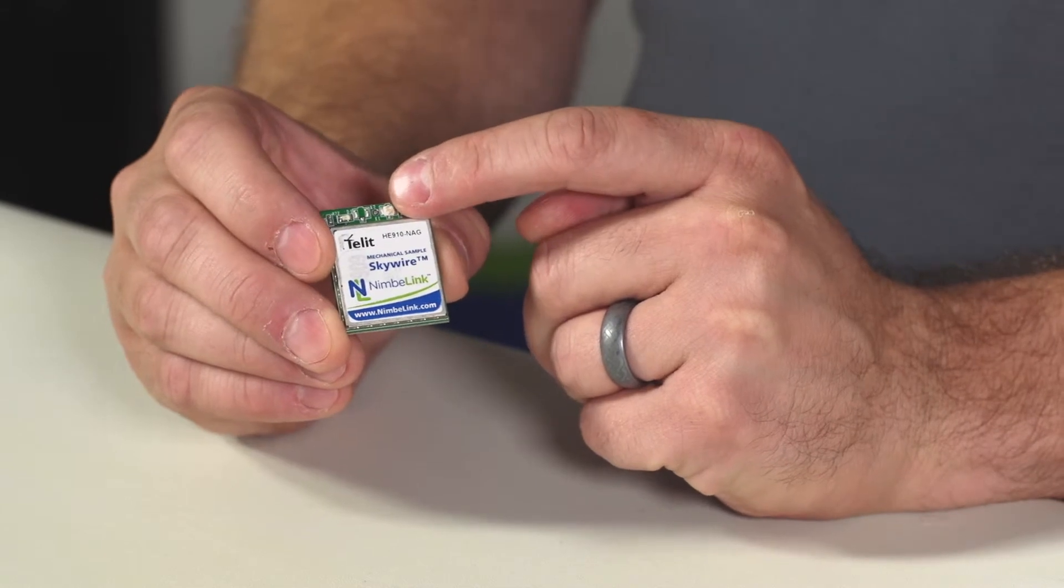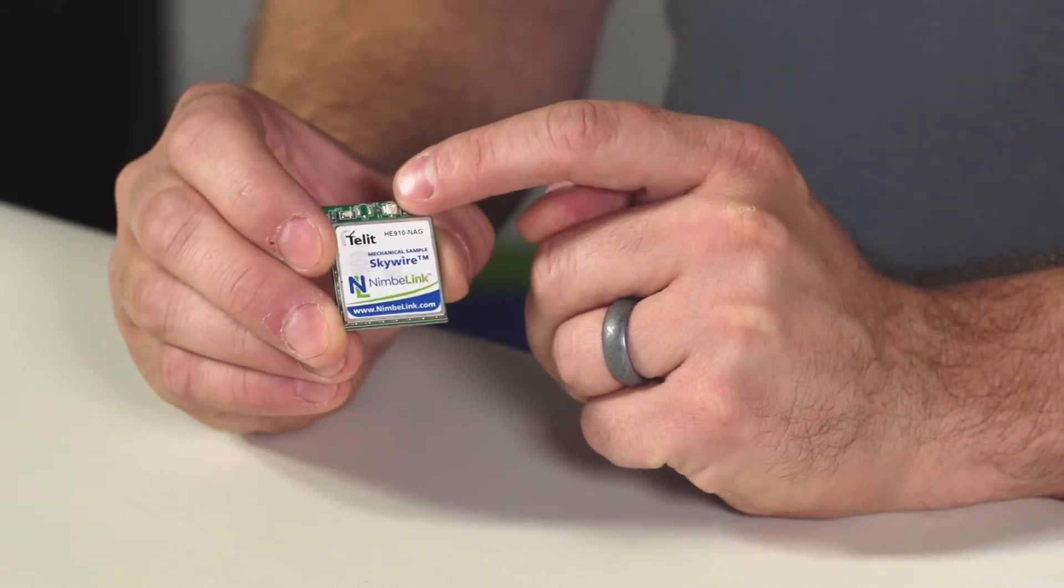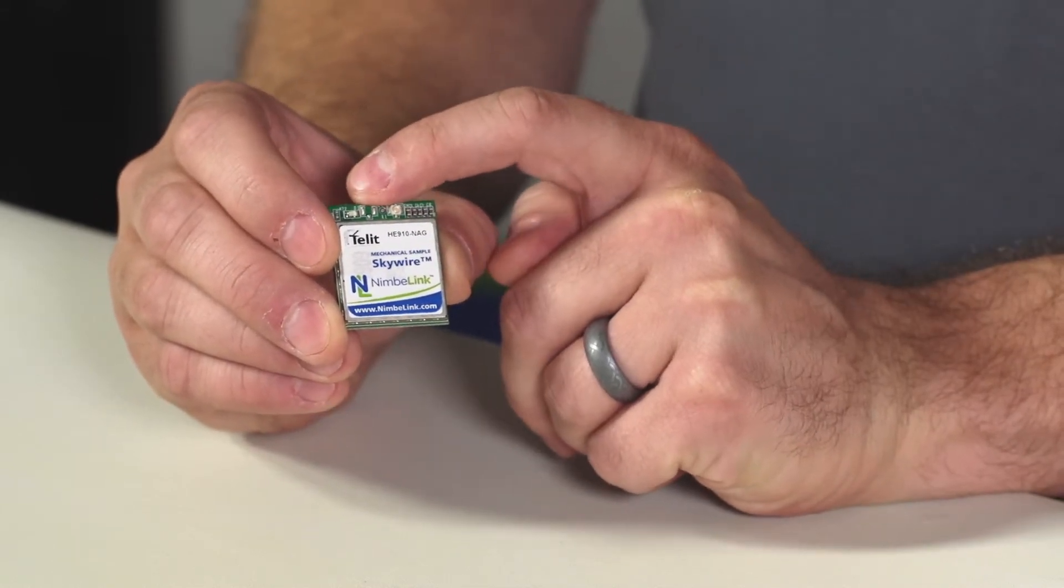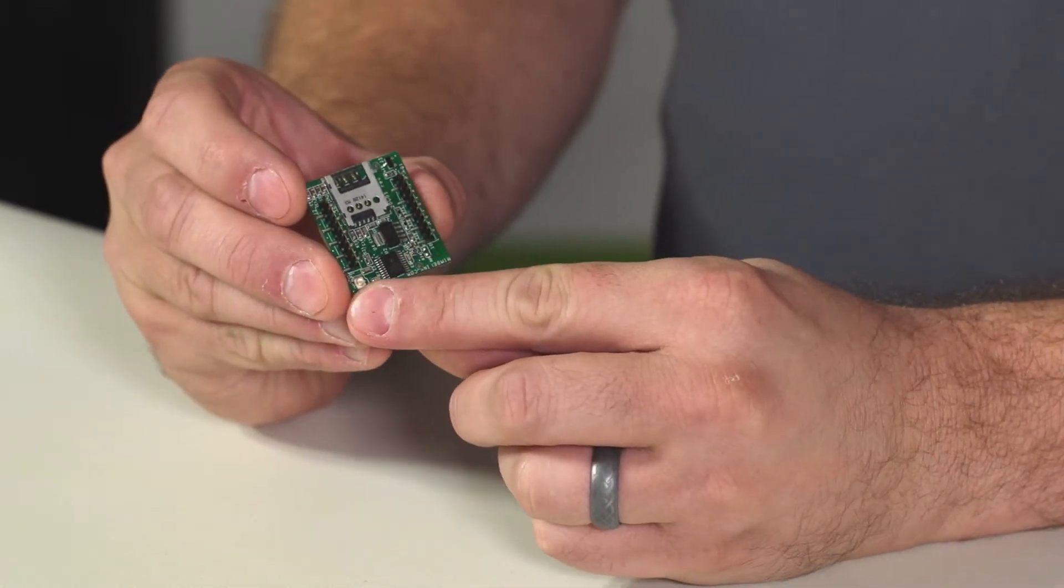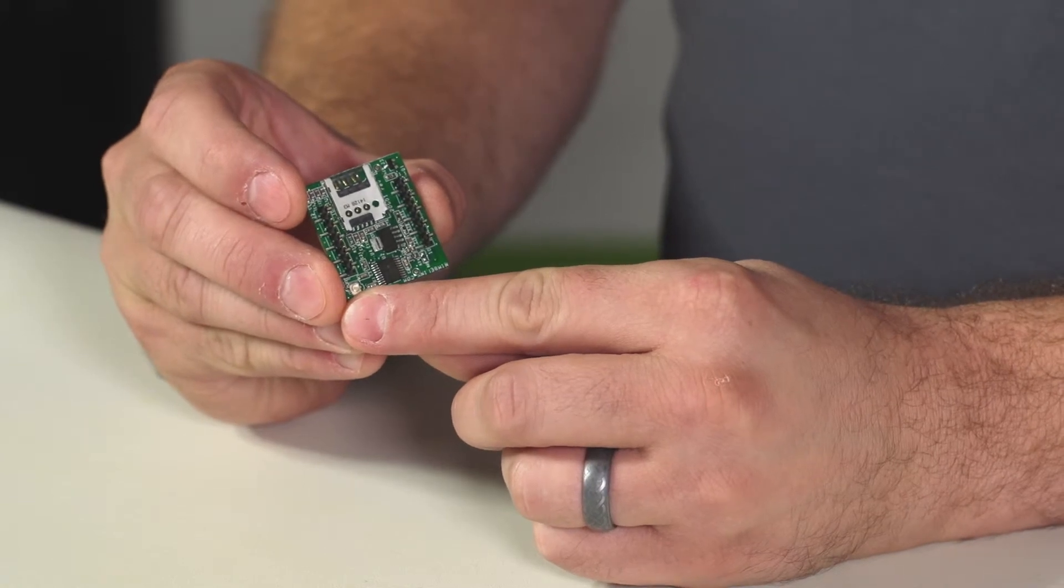The first connection point is for the primary cellular connection, the second connection point is for a diversity antenna connection, and on the back side of the product there's a third connection point for GPS connections.